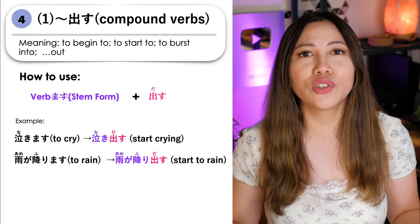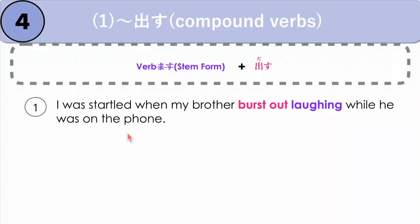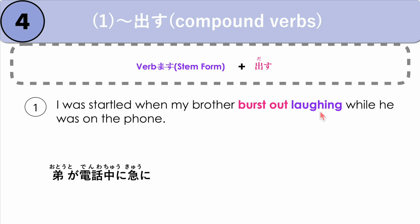Let's take a look at some examples. I was startled when my brother burst out laughing while he was on the phone. We say: otooto ga denwa chuu ni, kyuu ni — my brother was on the phone, and then suddenly — our verb is to laugh, which is waraimasu. We remove masu, we get the stem warai, plus dasu. In this case we are talking about past tense, so we say dashita, followed by node. Because my brother burst out laughing, I was startled: watashi wa bikkuri shita. Otooto ga denwa chuu ni, kyuu ni, warai dashita node, watashi wa bikkuri shita.